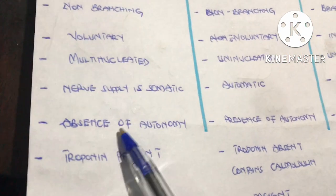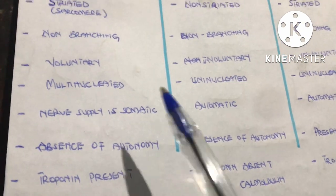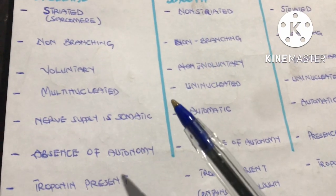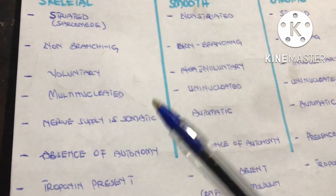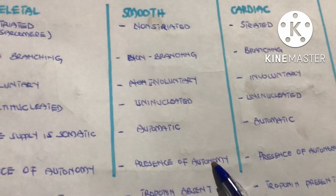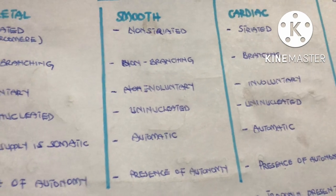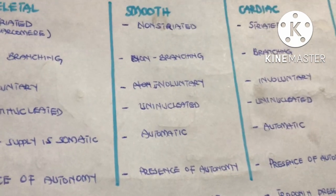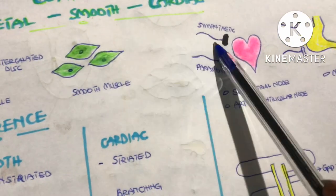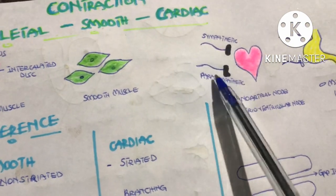The cardiac muscle also has an autonomic nerve supply. There is absence of autonomy in skeletal muscle — the skeletal muscle cannot fire or initiate its own action potential; it can only do so with the help of nerve supply. But smooth muscle has autonomy: it can initiate its own action potential without any nerve supply, and the same applies to cardiac muscle.